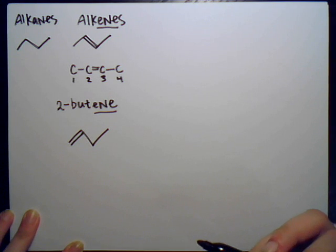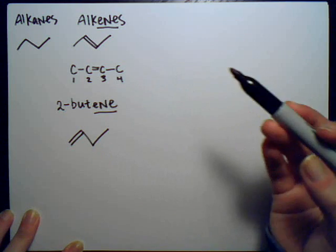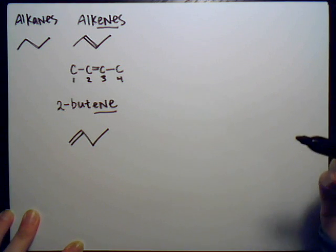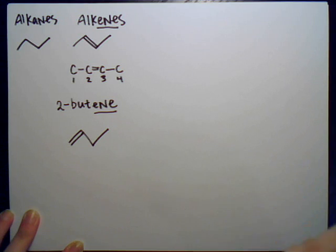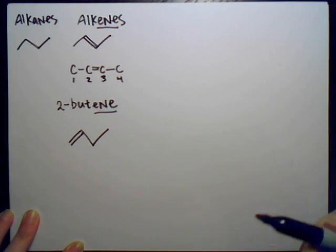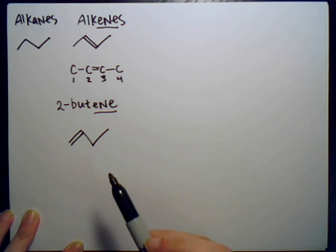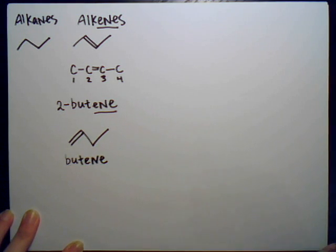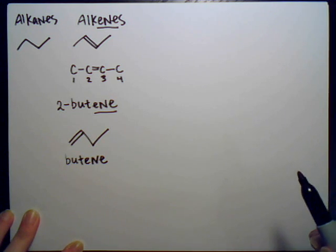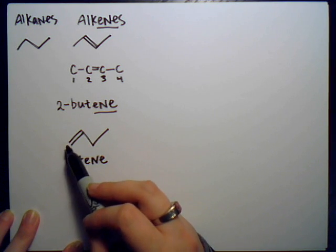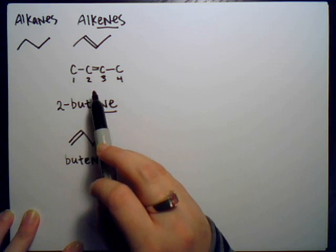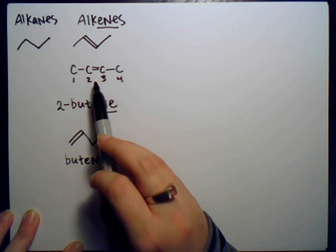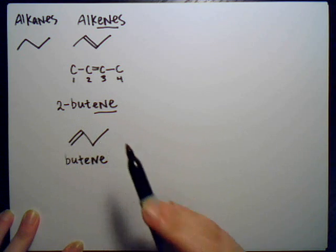If you don't specify the carbon — whether for an alcohol group, a double bond, or a methyl or ethyl group — and there's only one of them, you assume it is on the first carbon. So if you just say 'butene' with no specificity, we assume the double bond occurs on carbon one, between carbons one and two. When it's between carbons two and three, we call it 2-butene.